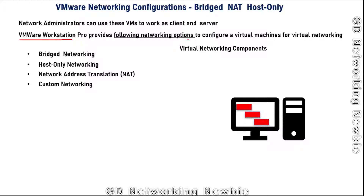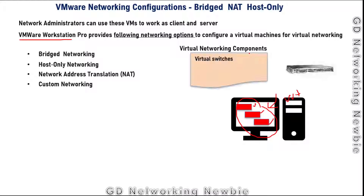To create virtual networks for virtual machines all running on a single host, VMware provides virtual networking components. The first component is the virtual switch. By using VMware Workstation Pro, we can have a virtual switch, which is used to create a local area network.